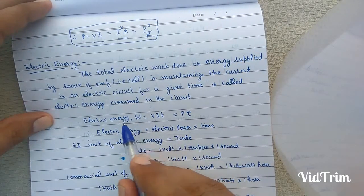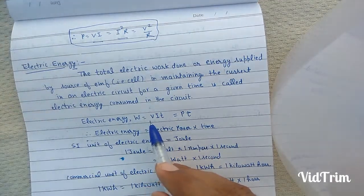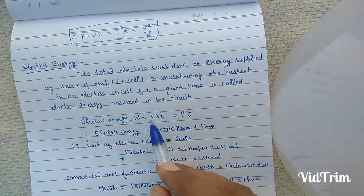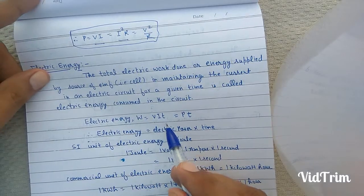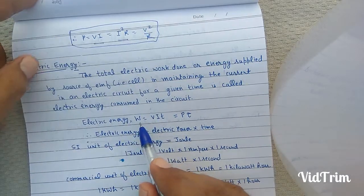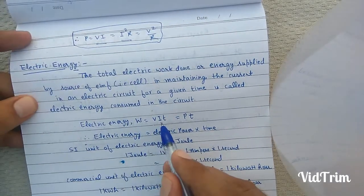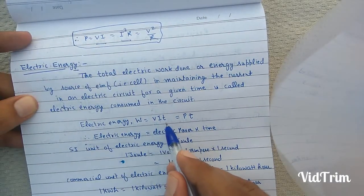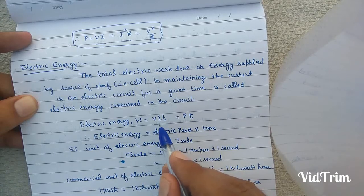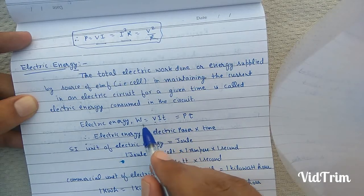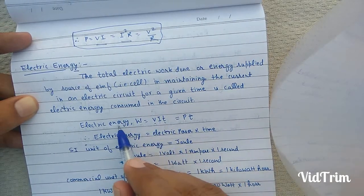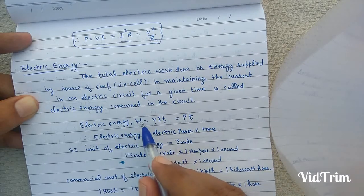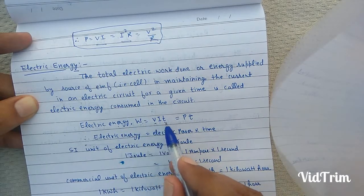Electrical energy is the total work done or energy supplied by the source of EMF in maintaining the current in the electric circuit for a given time. The work done in maintaining the current I for a time T, when a potential difference V is applied, is equal to W = VIT. Therefore, electrical energy W = VIT.